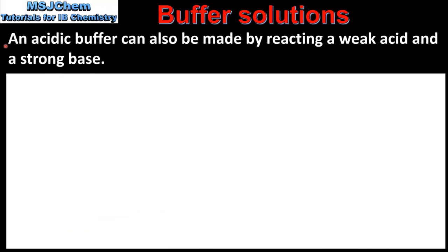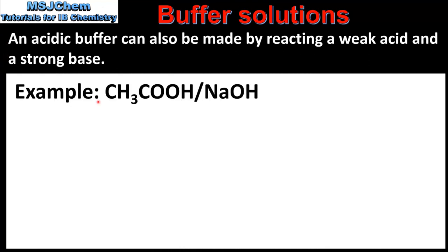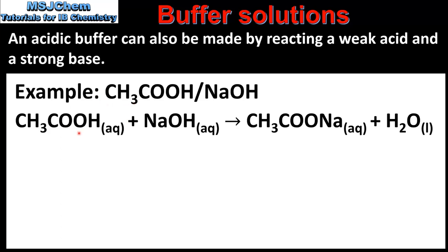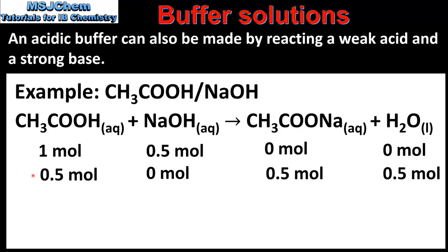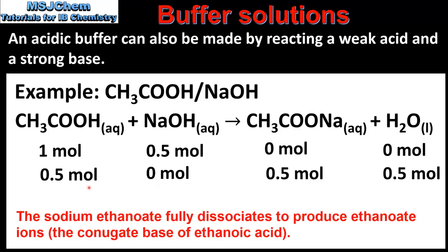An acidic buffer can also be made by reacting a weak acid and a strong base. An example is ethanoic acid and sodium hydroxide. In this reaction, 1 mole of ethanoic acid reacts with 0.5 moles of sodium hydroxide to produce sodium ethanoate and water. At the end of the reaction we have 0.5 moles of ethanoic acid remaining, 0.5 moles of sodium ethanoate, and 0.5 moles of water, with no sodium hydroxide remaining. So in the buffer solution we have equal amounts of ethanoic acid and sodium ethanoate.